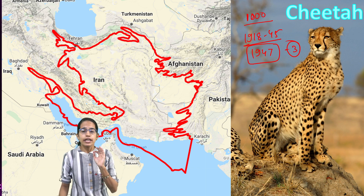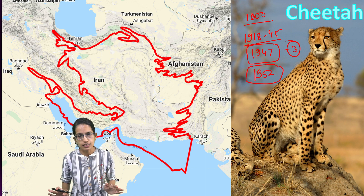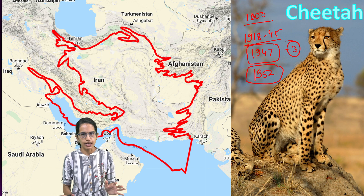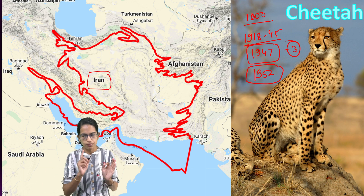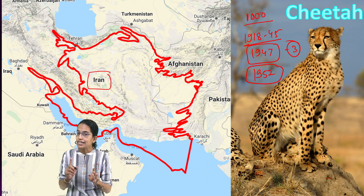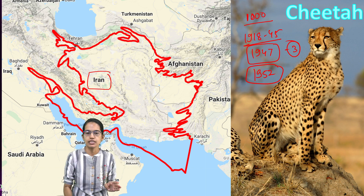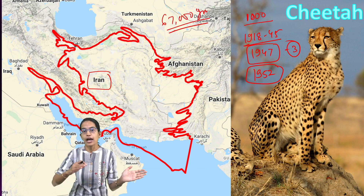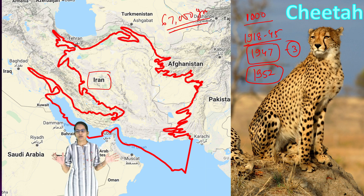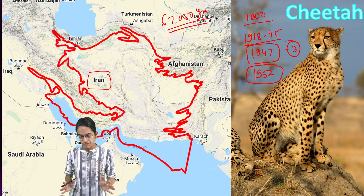In 1952 we officially declared that there are no more Asiatic cheetahs, or no more cheetah found in India. The only place where Asiatic cheetah are found as of date is Iran, the region which has been marked here. It is believed that Asiatic cheetah evolved from the African cheetah nearly 67,000 years ago. Since they evolved from African cheetah, there are huge similarities which are seen, but still there are numerous differences.